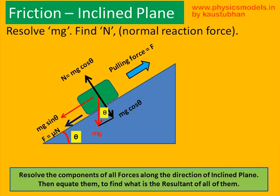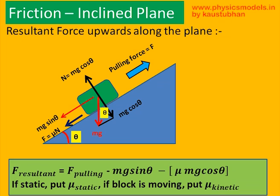Now let's look at all the forces and how to work with them. The mg always acts downwards to the center of the earth. Depending on the angle of the plane, theta, if we draw the geometry and a triangle, you get a normal to the plane — the base of that triangle is mg cos theta, which is smaller than mg. Therefore the plane pushes back on the block with a normal reaction equal to mg cos theta. The frictional force f equals mu times n, and adjusts itself according to n. The mg sin theta is the perpendicular part of that triangle and acts backward.